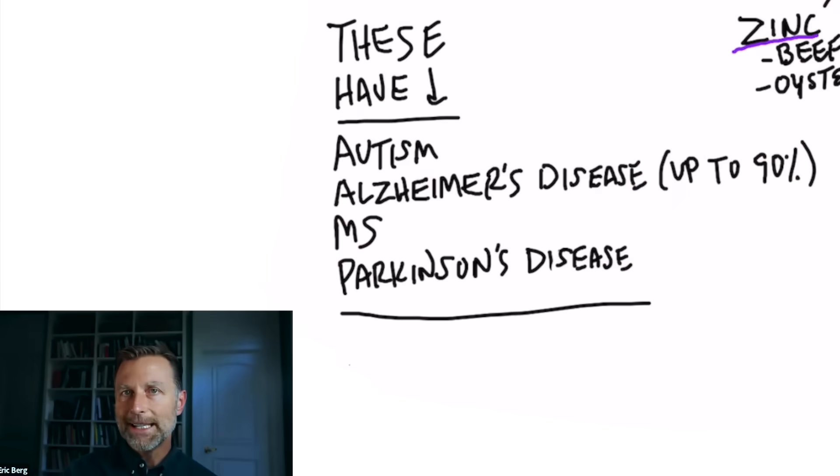There's also several conditions that you need to be aware of that nearly always have lowered acetylcholine: Autism, Alzheimer's and dementia, MS, and Parkinson's disease. Let me go through all the things that can increase acetylcholine in your brain.